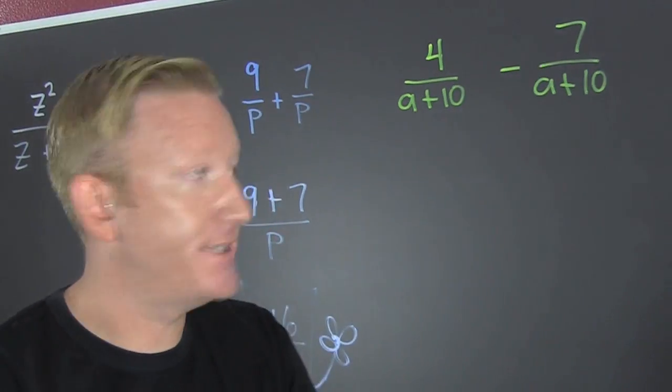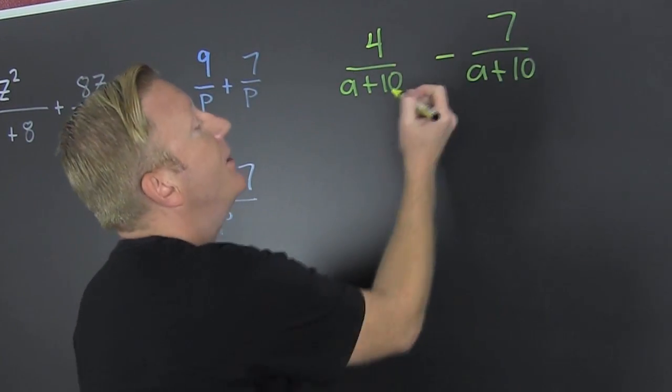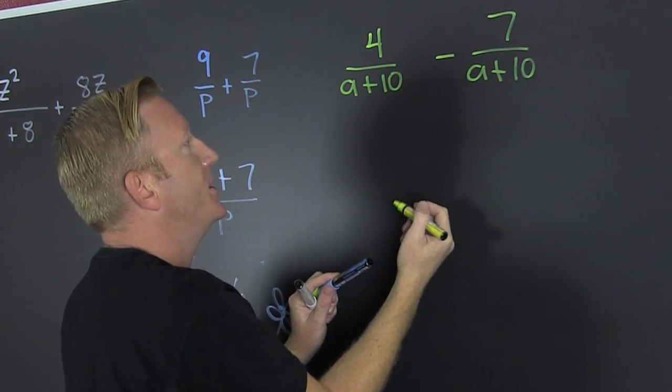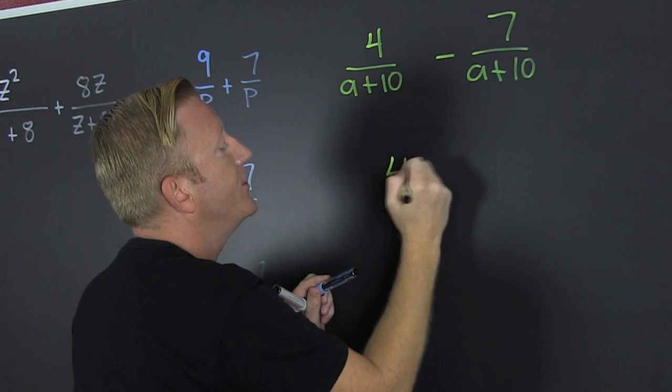I'm over here to our second example. Here we're subtracting rational expressions with like denominators. So once I have those common denominators, then I subtract their numerators.